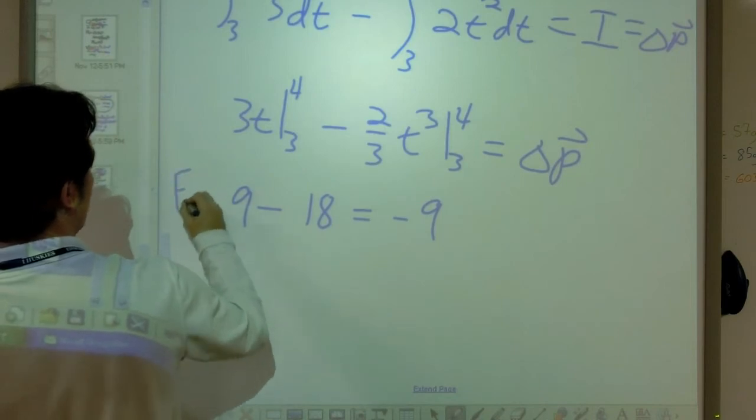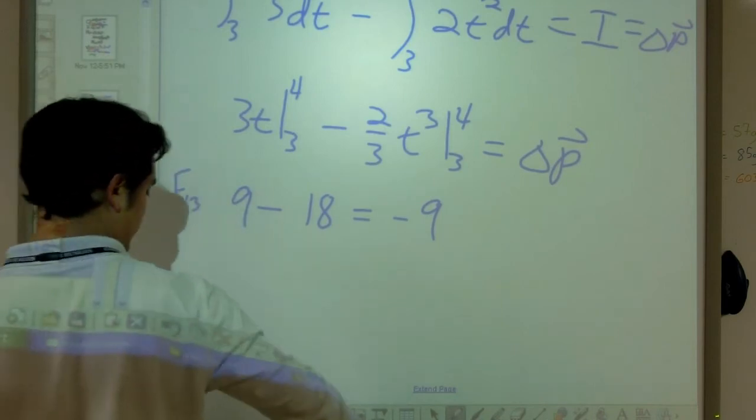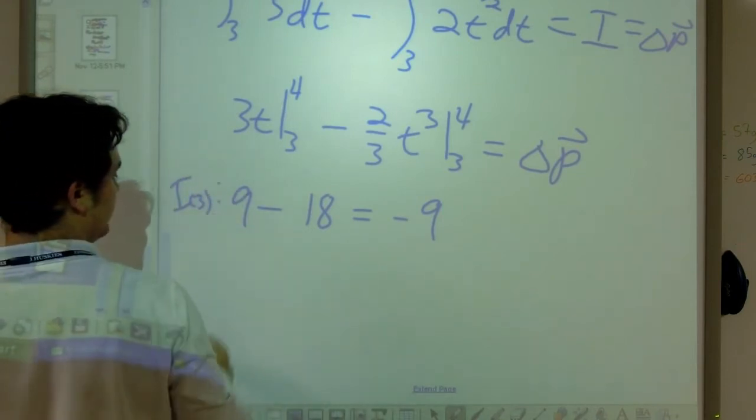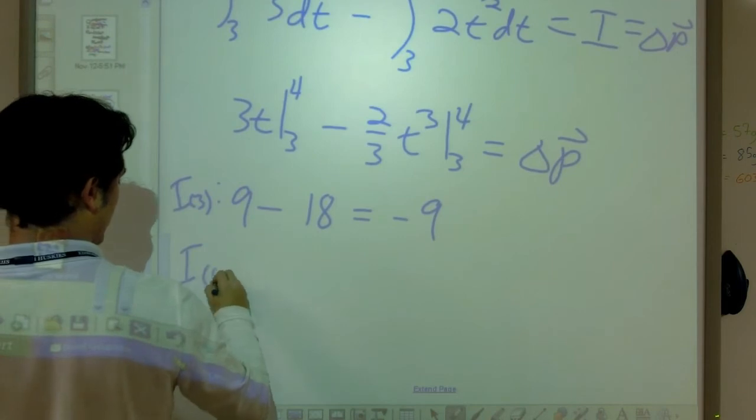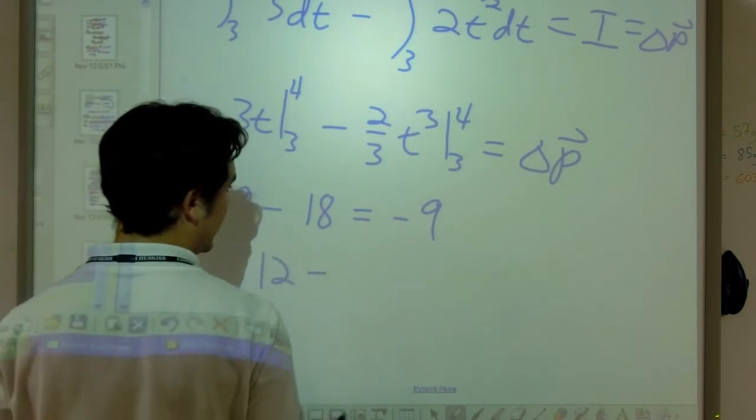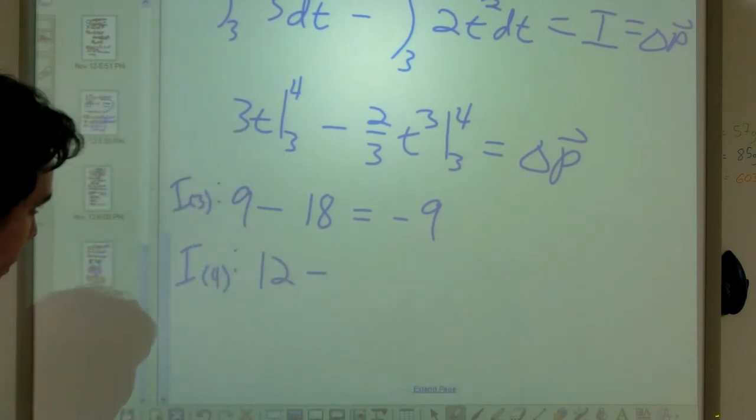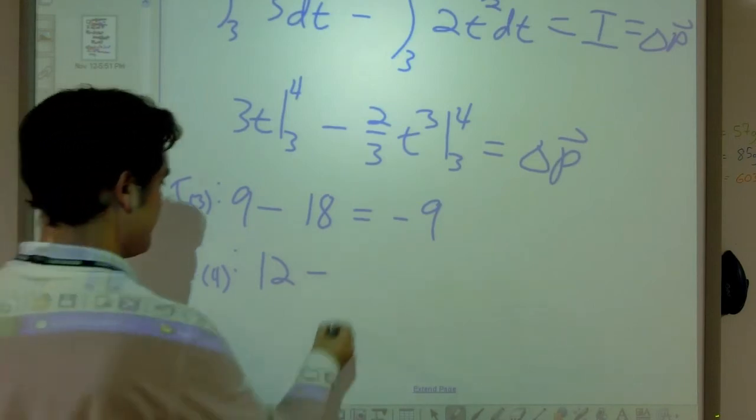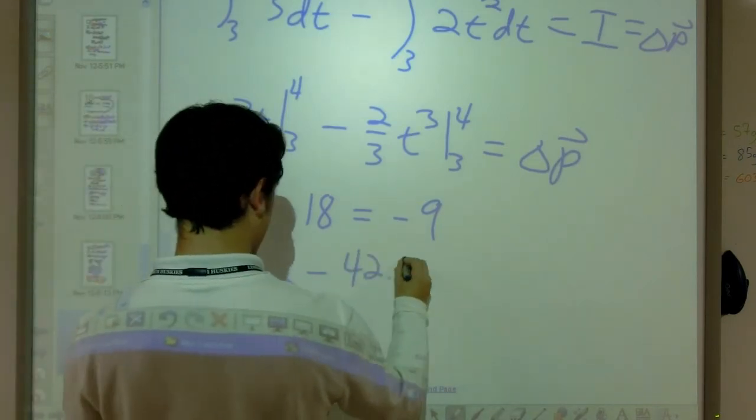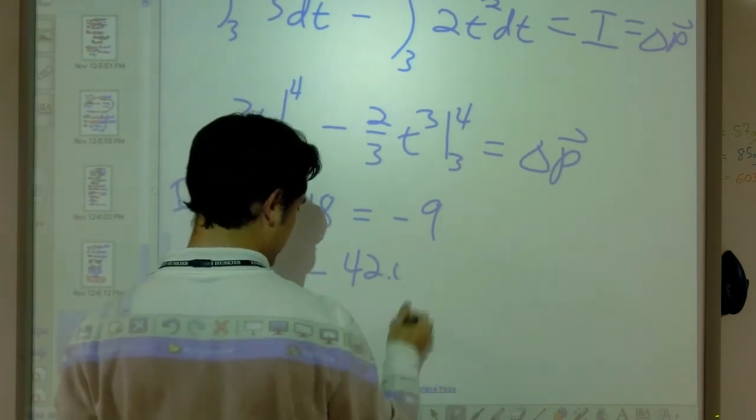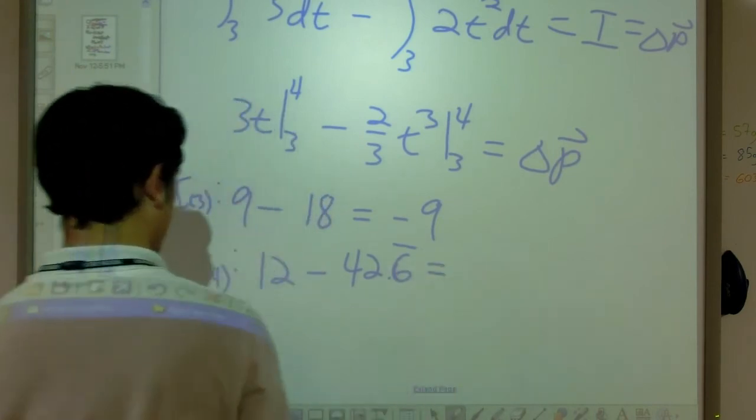And this is our impulse evaluated at three. Our impulse evaluated at four is going to be equal to 12 minus, let's see, four raised to the third power times two divided by three equals minus 42.66. The six is repeating, so 42 and two thirds. We're going to take that, we'll have negative 30.6 repeating.